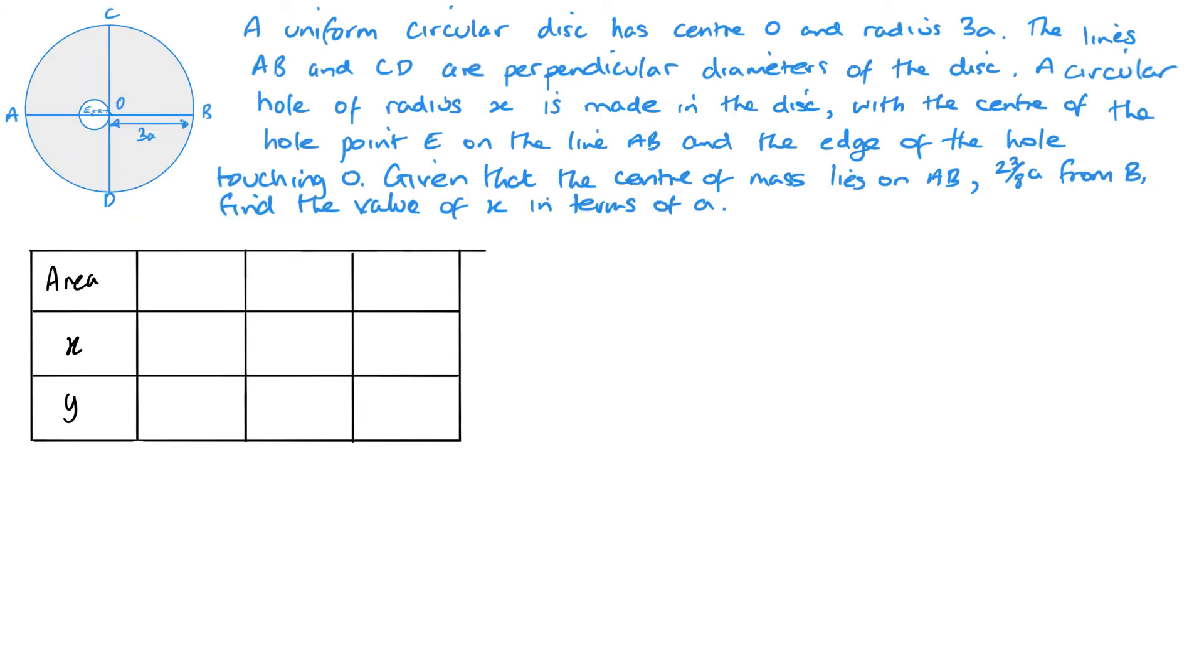Now, with this one, I'm going to start off by just putting my information into this table, what I know so far. 23 over 8A is somewhere up here. That's where the centre of mass lies, because it's from B. It's a bit closer down there. It's from B.